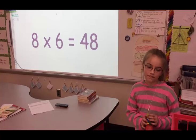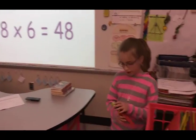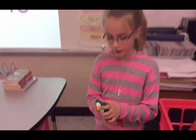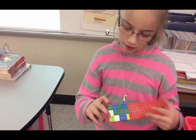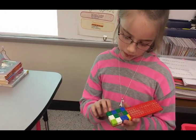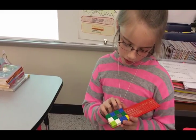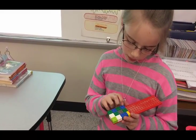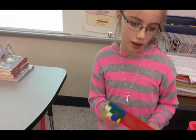Hi, Izzy. Can you explain how you made eight times six equals 48 with your Legos? So I took it and made it like this, and I counted by twos across the top. So how many twos was that? Four. Which makes? Eight.